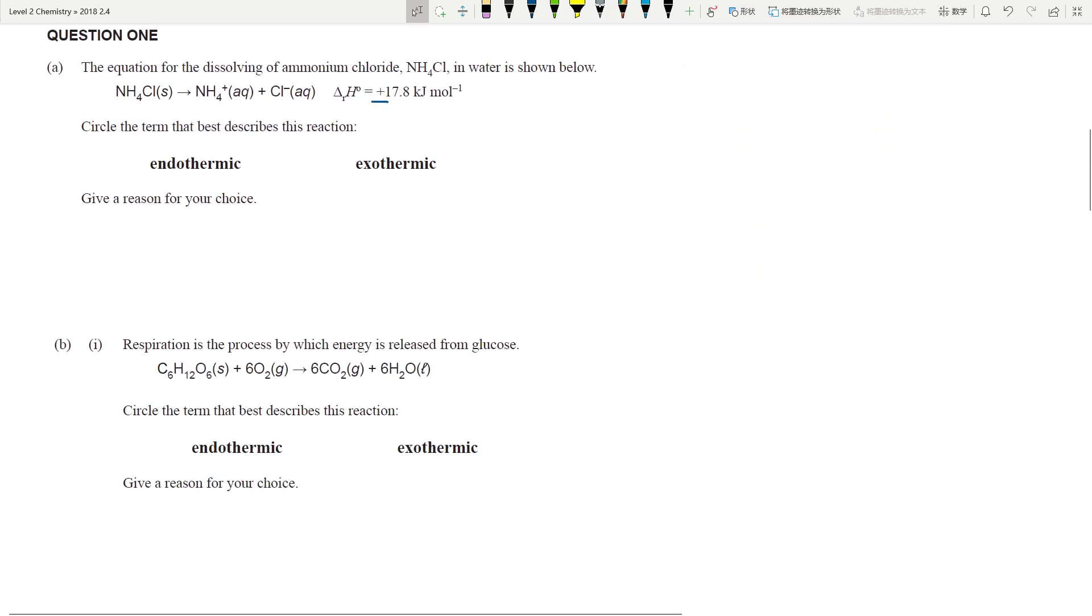Let's look at the first question. I already highlighted this - circle the term that best describes this reaction. This is an endothermic reaction. Why is it endothermic? Because the delta H is a positive number. Next one, respiration is a process which energy is released. They even said that energy is released, therefore it's exothermic.